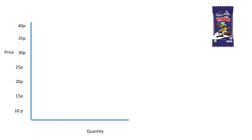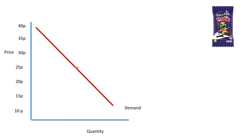We looked at in class the supply and demand of Freddos — my favourite chocolate bar. We found that when Freddos were really cheap, all of us wanted one, and gradually as they got more expensive, fewer of us wanted one. At the end it was only me who wanted one. So our demand curve slopes downwards: at a high price we demand less, at a low price we demand loads.